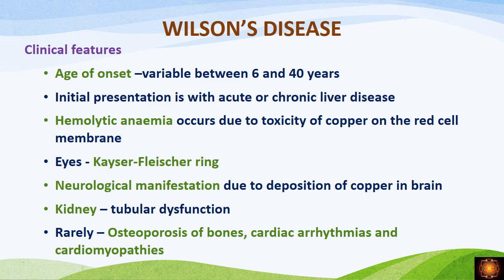The clinical features: age of onset is variable, from 6 years to 40 years. Initial presentation is with hepatic disease — acute or chronic liver disease. The patient will have hemolytic anemia due to copper toxicity to the red cell membrane, Kayser-Fleischer rings in the eyes, neurological manifestations if copper is deposited in the brain, tubular dysfunction in the kidney, and rare presentations include osteoporosis involving bones, cardiac arrhythmias, and cardiomyopathies.